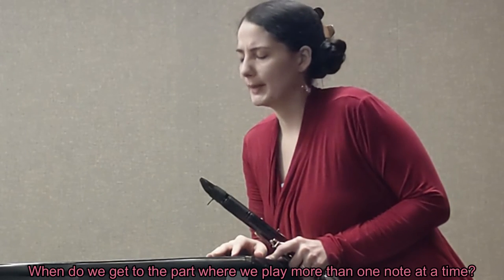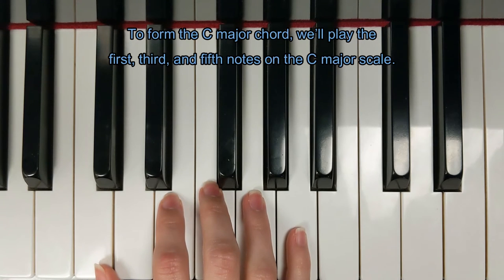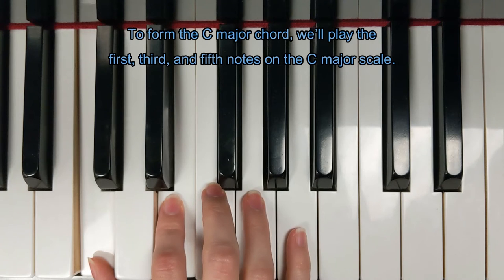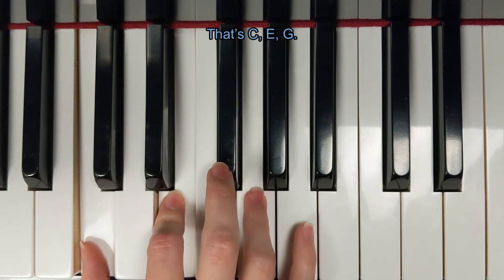When do we get to the part where we play more than one note at a time? Right about now. To form the C major chord, we'll play the 1st, 3rd, and 5th notes on the C major scale. That's C, E, G.